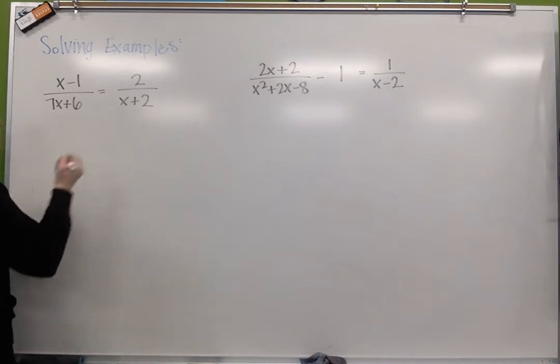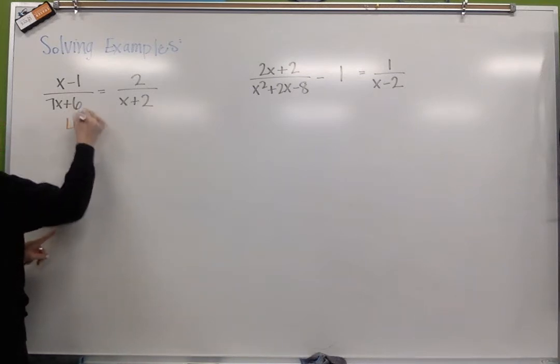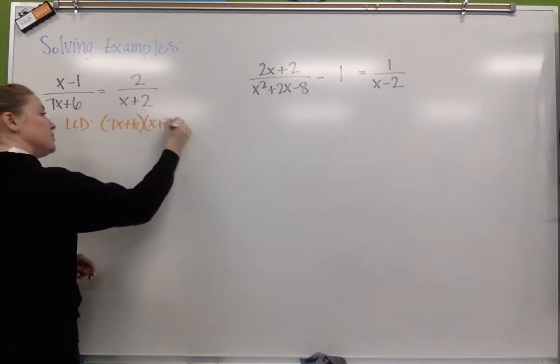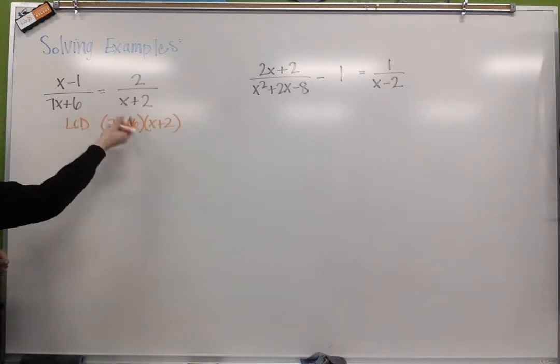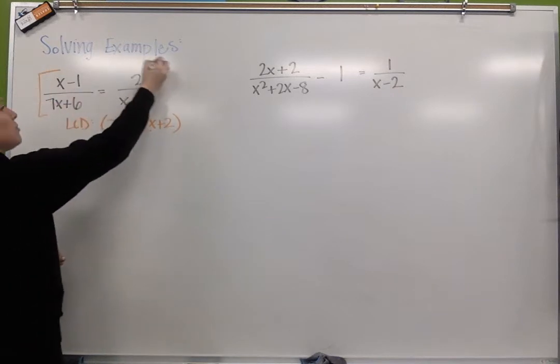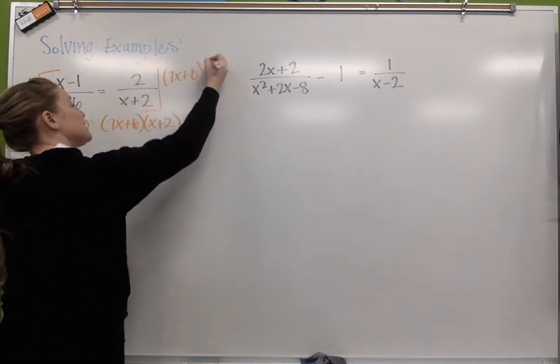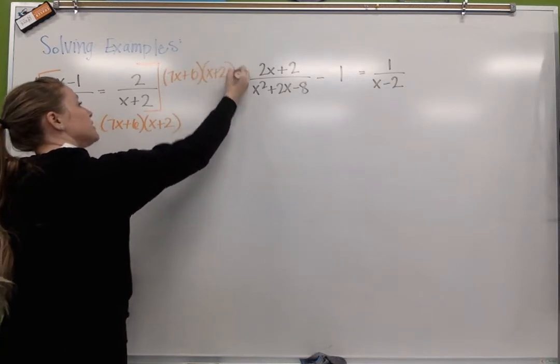No factoring to worry about, so I got to find that LCD which is going to be my 7x plus 6 times x plus 2. Just multiply the denominators together. And I'm going to come in and I'm going to go ahead and distribute my 7x plus 6 times x plus 2.